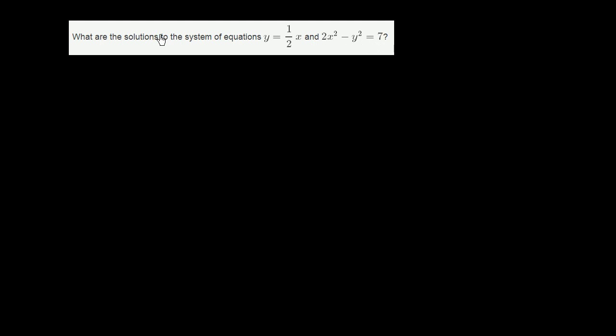They say solutions because these two, if we view them as two curves, could very well intersect with each other twice. So let's see what's going on here. We have y equals 1 half x, and 2x squared minus y squared equals 7. The best way to approach these is to substitute one constraint into the other constraint, or substitute one equation into the other one.